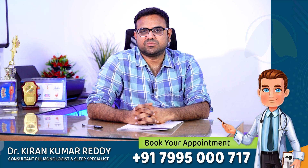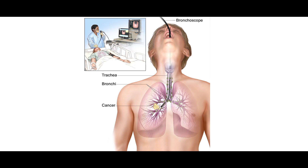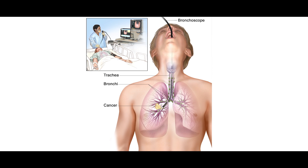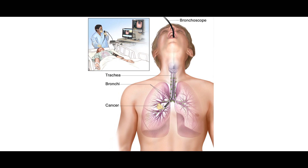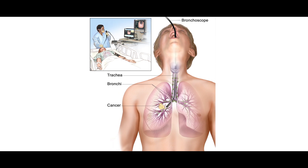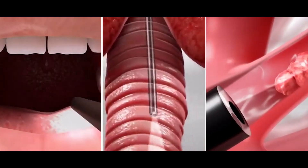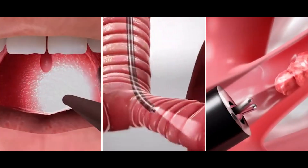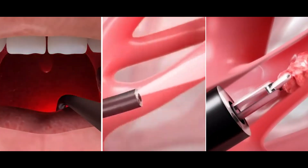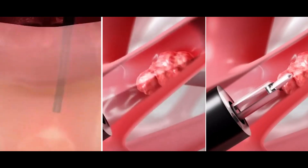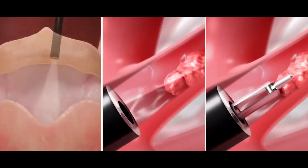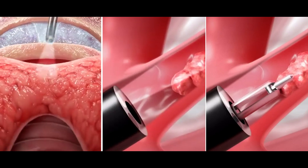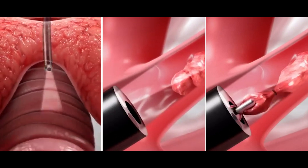What is bronchoscopy? Bronchoscopy is nothing but airway endoscopy. We use bronchoscopy to see inside your airways — your trachea, bronchi — and to collect samples from your lungs.